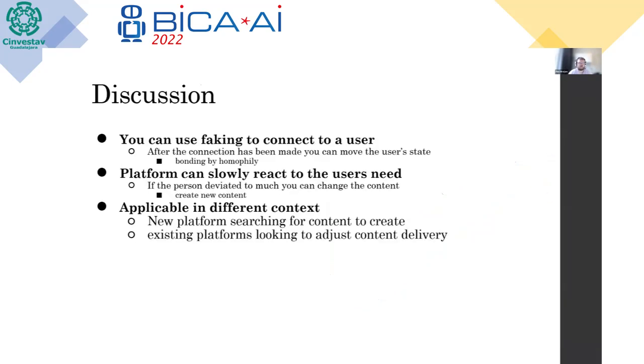So if we discuss this phenomenon, you can use faking to connect to a user. So after you actually got this user with the right amount of content and the right type of content, you can actually move the user state through bonding by homophily, and platforms can slowly react to the user's needs. So if the person deviated too much from the original type of content, you could create new content.